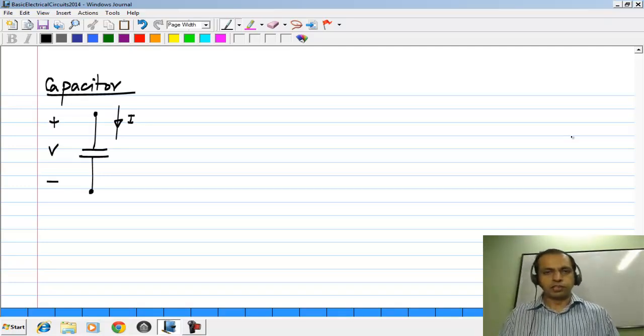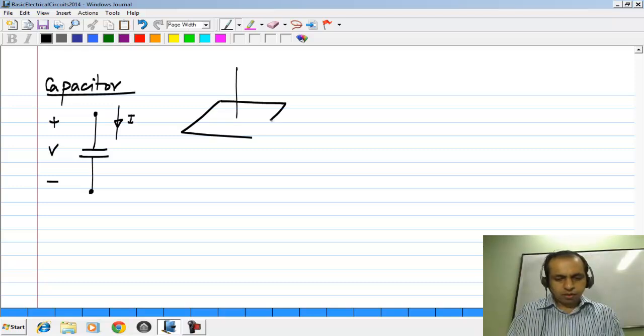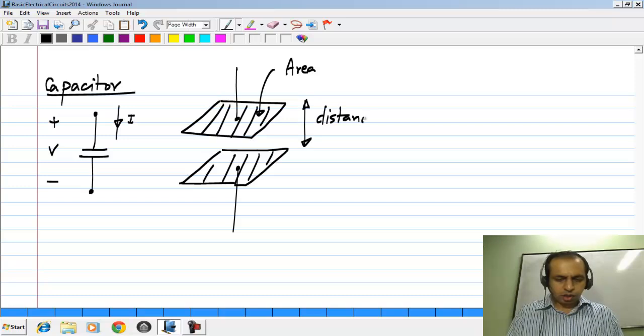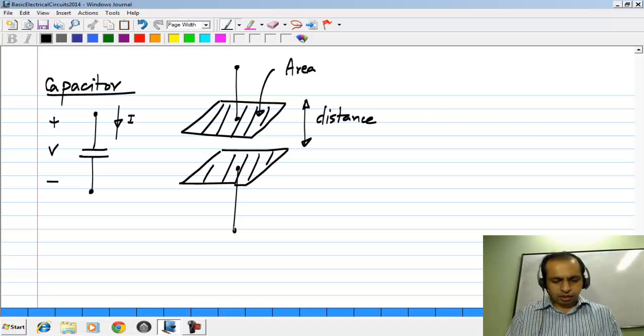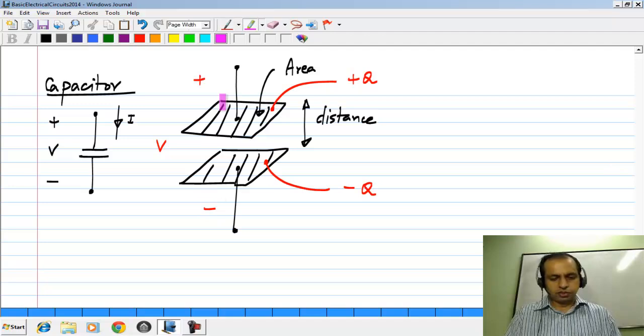From basic physics classes, all of you would be familiar with the prototype structure of a capacitor, which consists of two parallel plates with some area and some distance between them. If you apply a certain voltage V between the plates, that causes a charge plus Q on the plate which is connected to the positive of this voltage V, and minus Q which is connected to the negative of this voltage V.